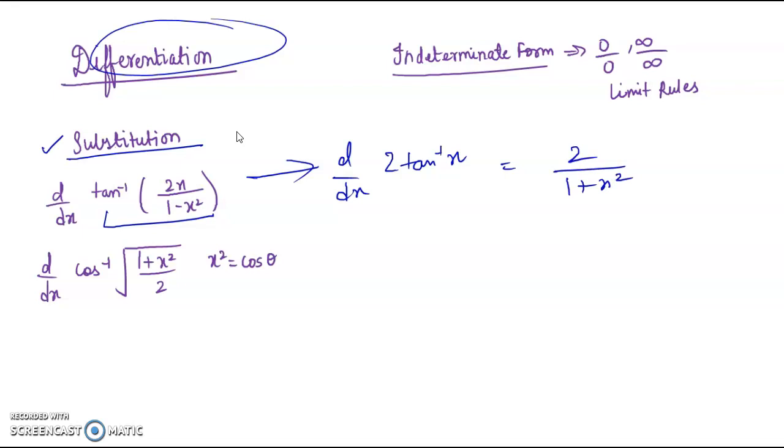d/dx of cos⁻¹(√((1+x²)/2)). If you start differentiating it like -1/√(1-this whole square) and carry on, you will get incorrect answer. In this case, you have to substitute x² = cosθ. These are the questions that will be asked, so please practice parametric questions also.